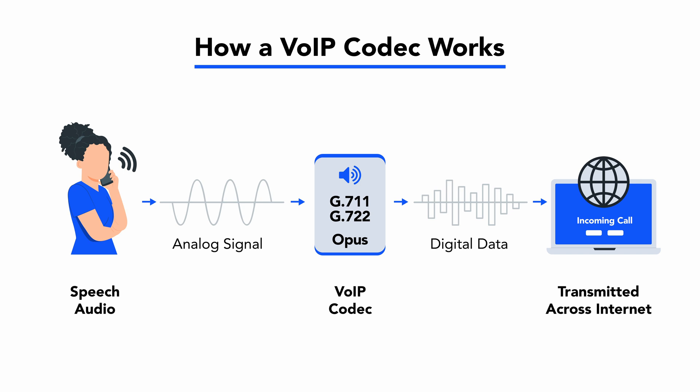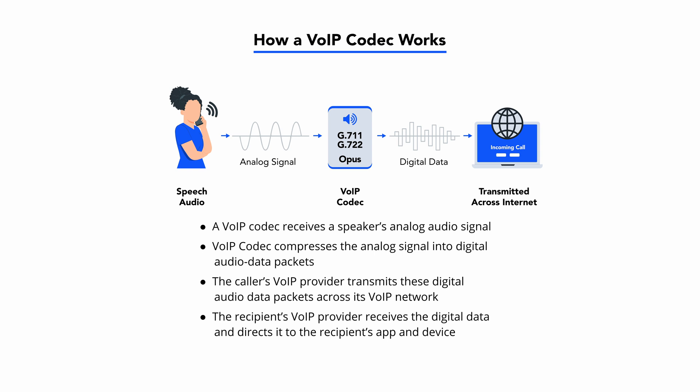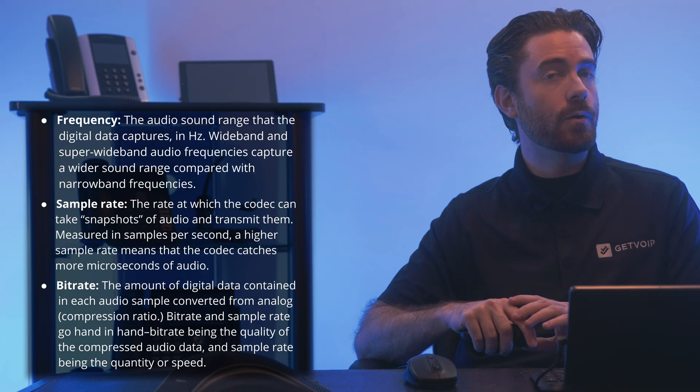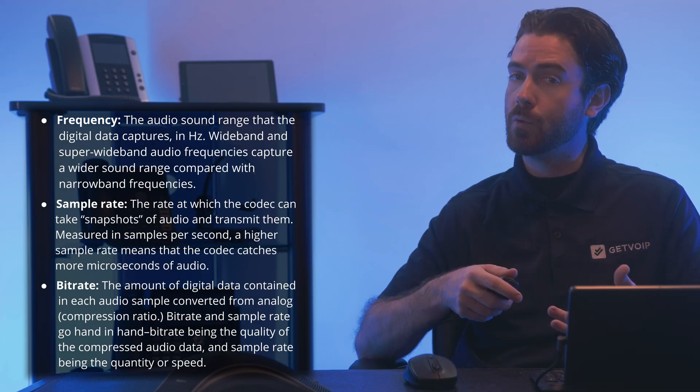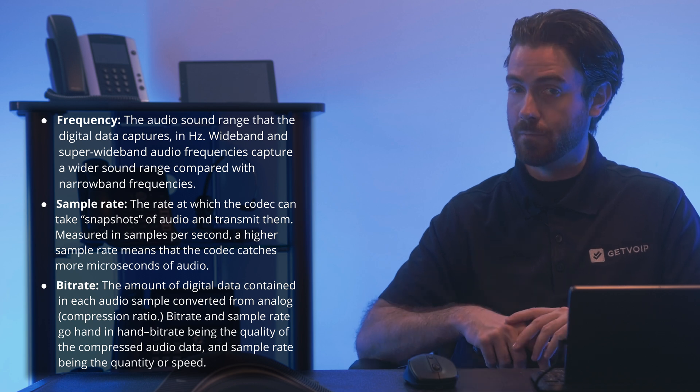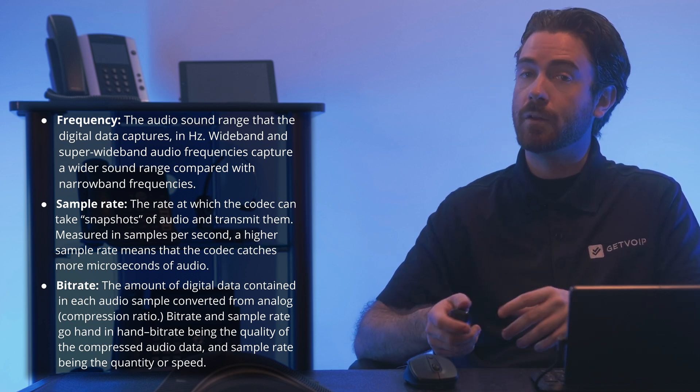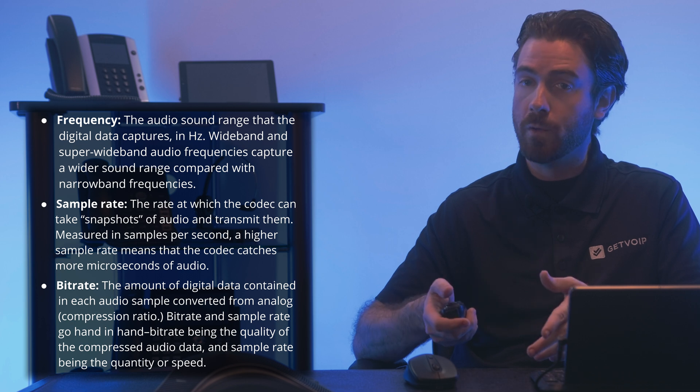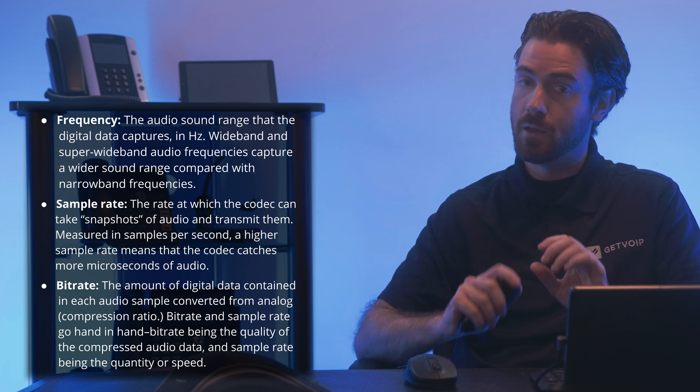Here's how VoIP codecs work in a cloud-based phone system. A VoIP codec receives a speaker's analog audio signal. The codec then compresses the analog signal into digital audio data packets. The caller's VoIP provider transmits these digital audio data packets across its VoIP network. The recipient's VoIP provider receives the digital data and directs it to the recipient's app and device. The compressed audio data's quality depends on three factors: frequency, sample rate, and bit rate.